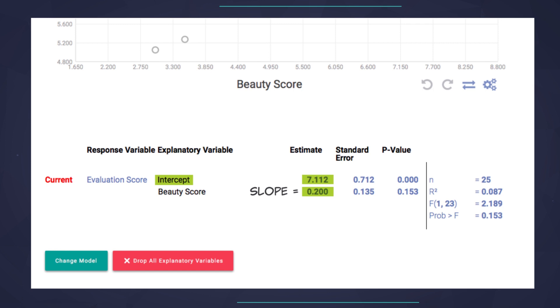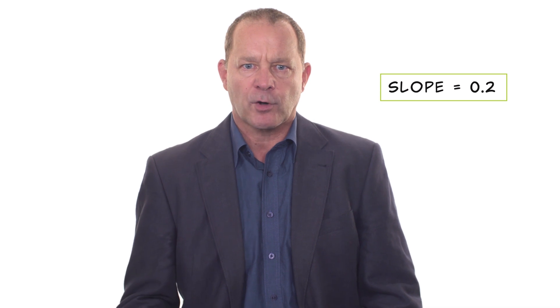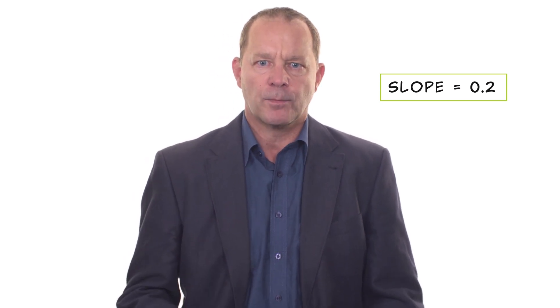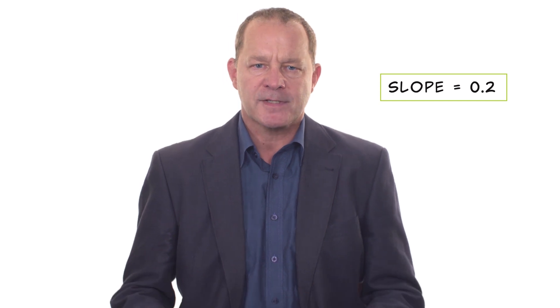Typically, what we care about in a regression is not so much the value of the y-intercept, but rather the value of the slope. The slope tells us by how much and in what direction the response variable changes when the value of the explanatory variable increases by one unit. With this slope in hand, we can do some interesting stuff.